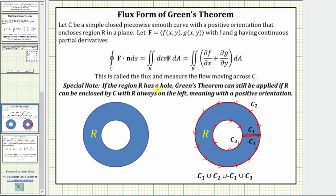However, if the region R has a hole, Green's Theorem can still be applied if the region R can be enclosed by C with R always on the left, meaning with a positive orientation. Looking at this region R, let's see if we can enclose it with a piecewise smooth curve with a positive orientation.